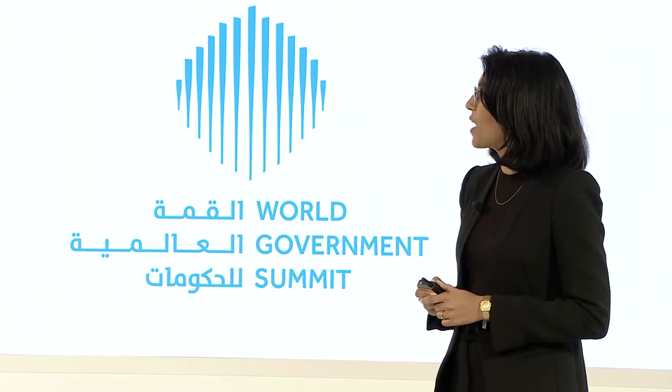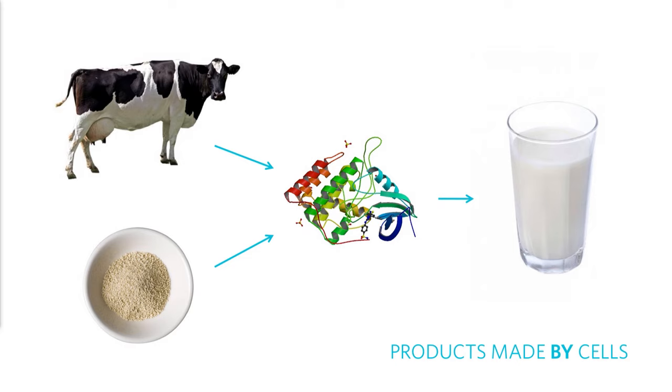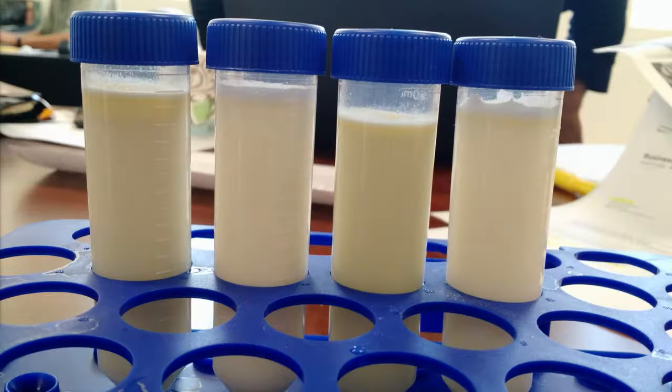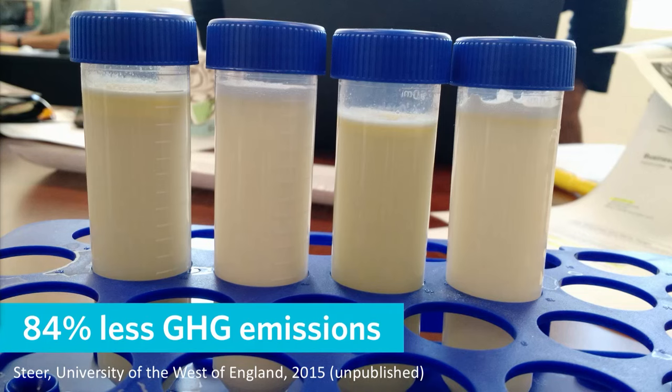Cellular agriculture is the production of agriculture products from cell cultures rather than from whole plants or animals, and it separates into two main categories. The first category involves products made by cells — the product itself is not a cell but may be a protein, fat, or enzyme. For example, milk is just a group of proteins and fats, and the idea is we can produce those exact same proteins using a simpler organism like yeast. This was a project we started in 2014, producing milk brewed in a fermentation process like beer. Producing milk this way would result in 84% fewer greenhouse gas emissions than milk from cows, because we avoid all those enteric methane emissions.